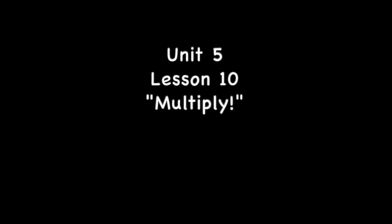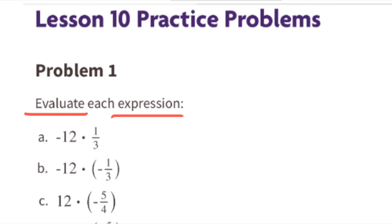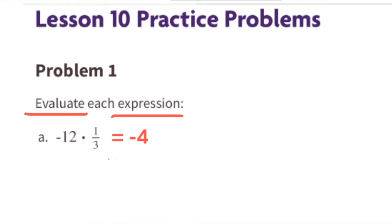Seventh grade Open Up Resources Illustrative Mathematics, Unit 5 Lesson 10 multiply. Problem number 1, evaluate each expression. Part A: negative 12 times one-third — that's the same as one-third of negative 12, or negative 12 divided by 3. The value of this expression is negative 4.